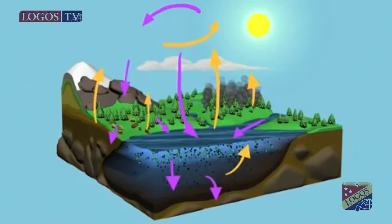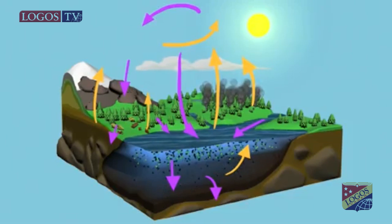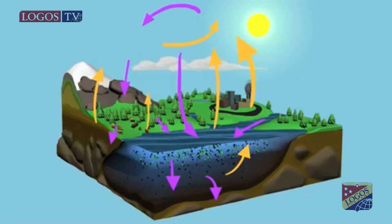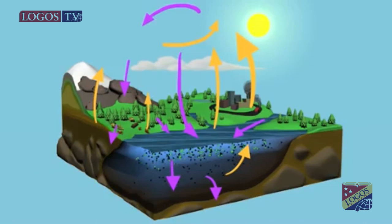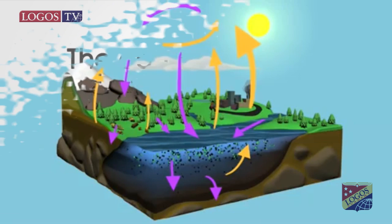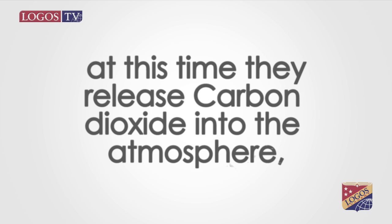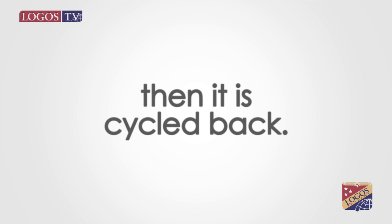When consumers eat producers, they take in the carbon-containing food molecules to obtain energy. The consumers break down the carbon compounds in a process called respiration. At this time, they release carbon dioxide into the atmosphere, and then it is cycled back.